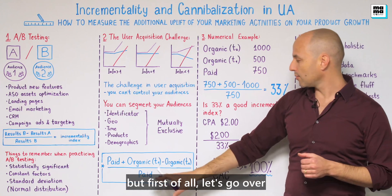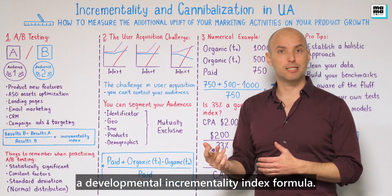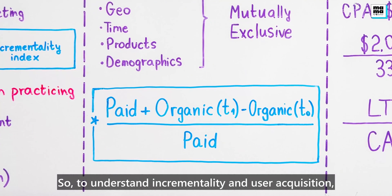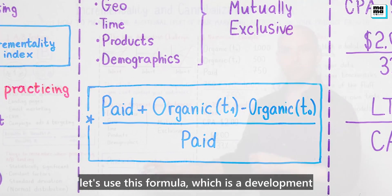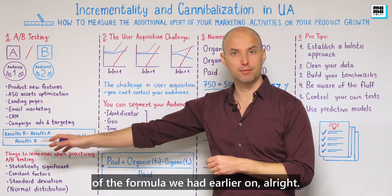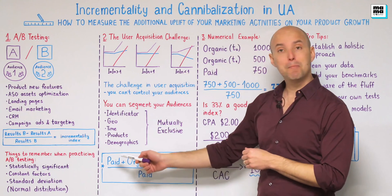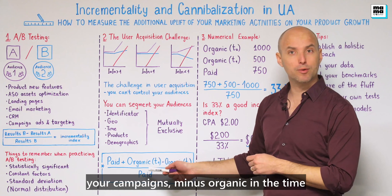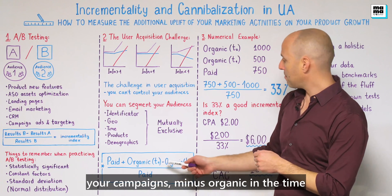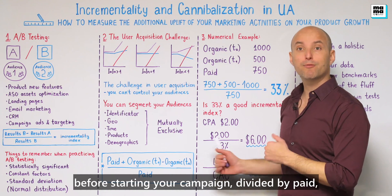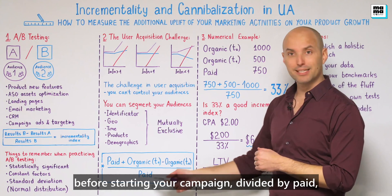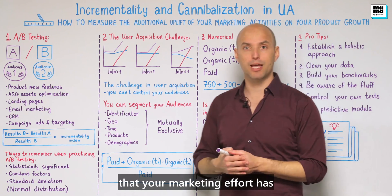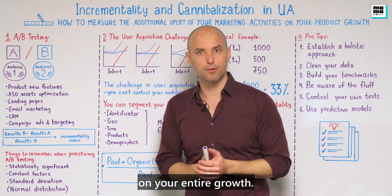Let's go over the development of the incrementality index formula. To understand incrementality in user acquisition, use this formula: (Paid + Organic at the time you started your campaigns) minus (Organic before starting your campaigns), divided by Paid. This gives you the incrementality index that your marketing effort has on your entire growth.